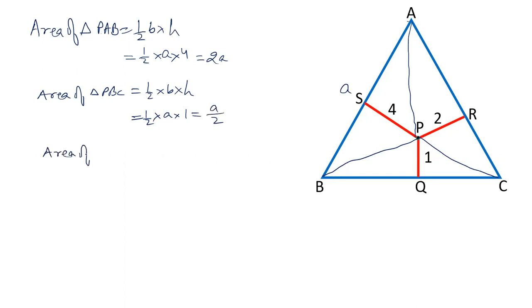And area of triangle APC is equal to half base into height. Base is A, height is 2. Cancel out, that is A.